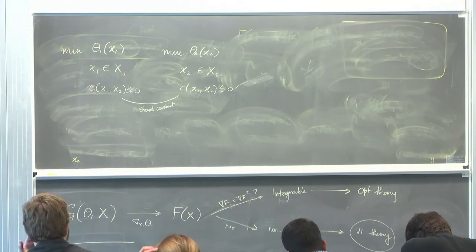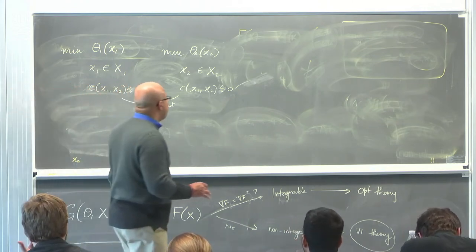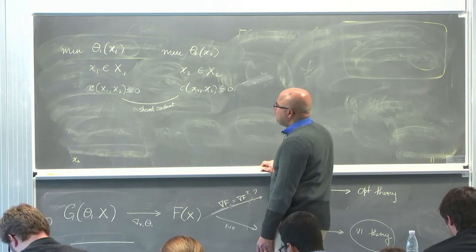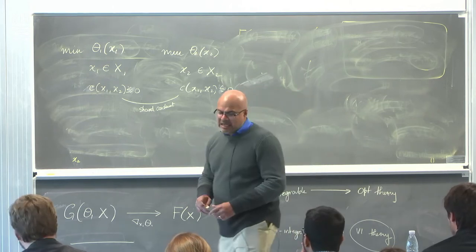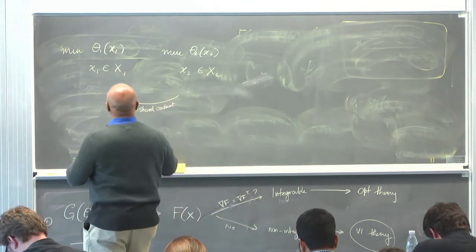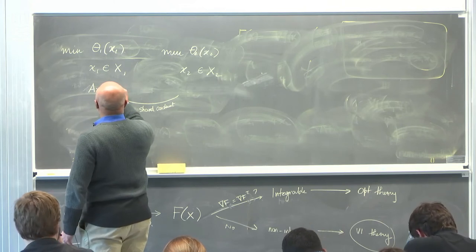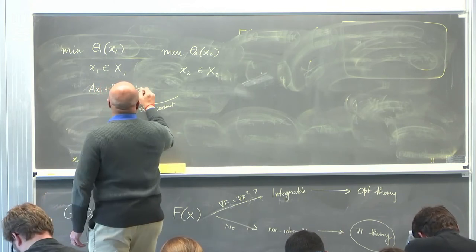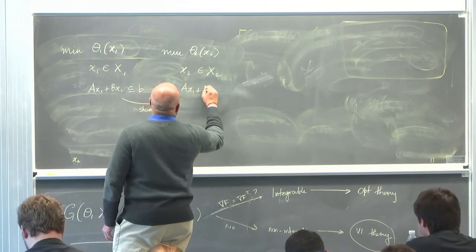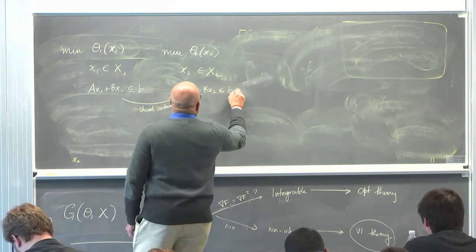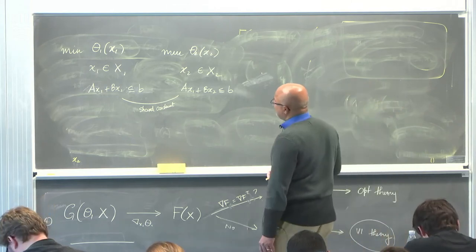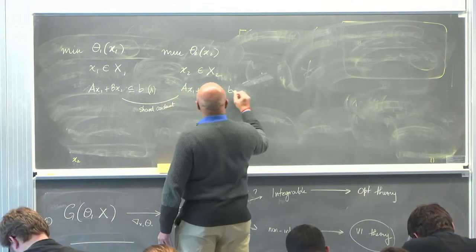One way to deal with this—and the question was how to deal with it—is to actually make this linear, so let's say ax1 plus bx2 less than b. What you do is basically first relax this constraint using a common Lagrange multiplier.